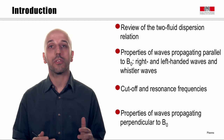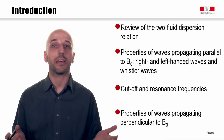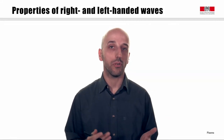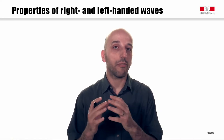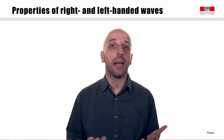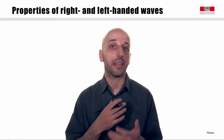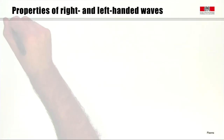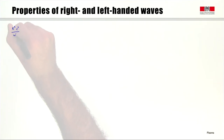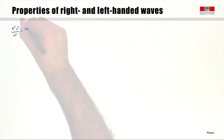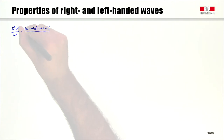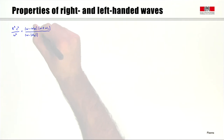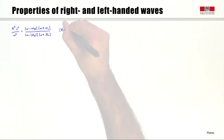We will then turn our attention to the physical properties of waves propagating perpendicular to the magnetic field. Let's start by looking at the properties of the left-handed and right-handed waves. We will do that by first recalling the dispersion relation and then looking at the range of frequency and wave number over which these waves can propagate. The dispersion relation for the right-handed waves reads: the index of refraction squared equals (ω − ωr)(ω + ωl) divided by (ω − |ωce|)(ω + |ωci|).